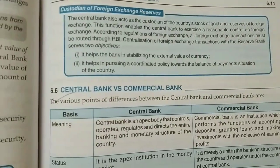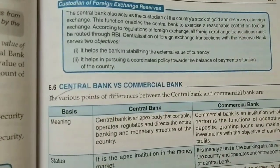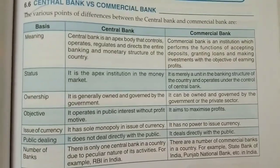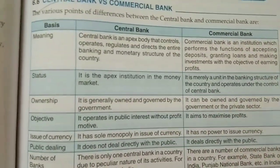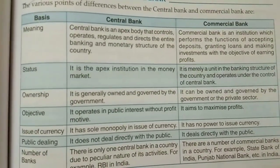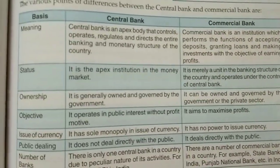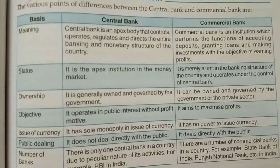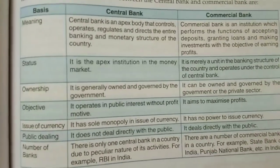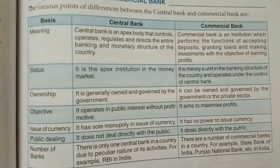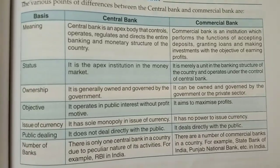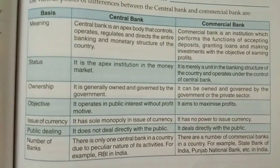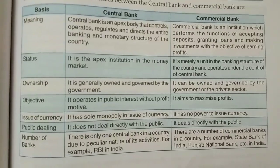Now we will see the difference between central bank and commercial bank. On the basis of meaning, the central bank is an apex institution that controls, directs, and regulates the entire banking and monetary structure of the country, whereas a commercial bank is an institution that performs two primary functions: accepting deposits and lending loans, with the objective of earning profit. The central bank holds a top position and directs other banks, whereas a commercial bank merely operates as a unit of the banking structure under the control of the central bank — that is, the RBI.